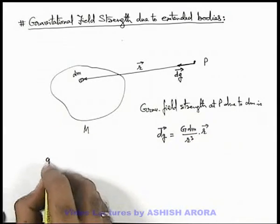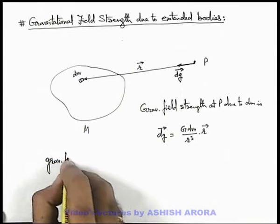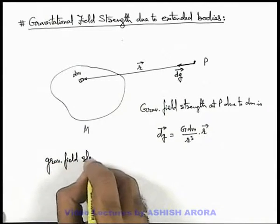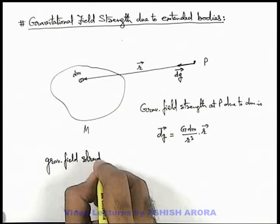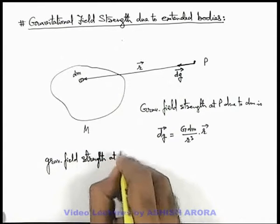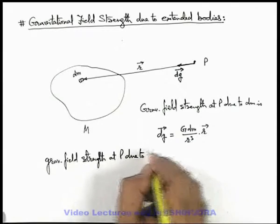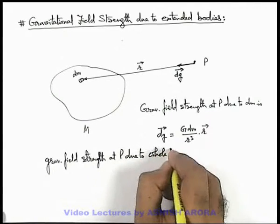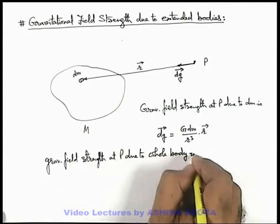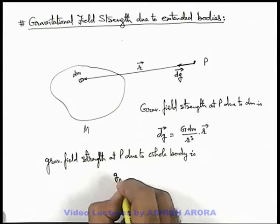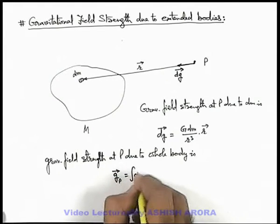And if we wish to find the gravitational field strength at p due to whole body is, this can be written as g at point p vector is integration of dg vector.